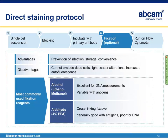The following fixation step is optional, as there are pros and cons. An advantage is the prevention of infection, for example with contagious diseases from patient blood samples. Fixation is also convenient since fixed samples need not be analyzed immediately but can be stored in the fridge. A disadvantage is that you cannot exclude dead cells, as fixation kills virtually all cells. Fixation also alters light scatter profiles and may increase autofluorescence, requiring adjustments to instrument settings.